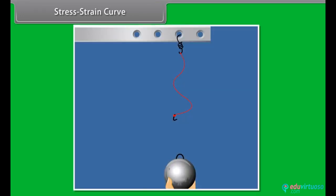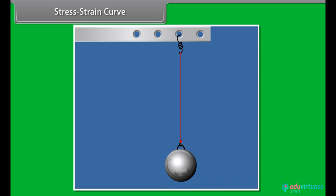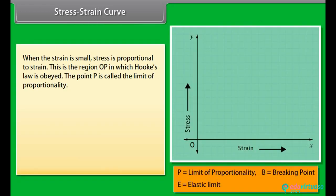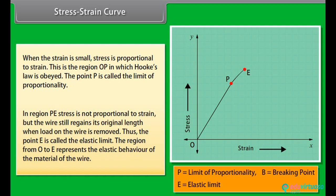Consider a wire suspended vertically. When the wire is loaded, a stress is developed, the wire increases in length, and thus strain is developed. From the stress-strain curve, when the strain is small, stress is proportional to strain. This is the region OP in which Hooke's Law is obeyed. The point P is called the limit of proportionality. In region PE, stress is not proportional to strain, but the wire still regains its original length when the load is removed. The point E is called the elastic limit. The region from O to E represents the elastic behavior of the material.